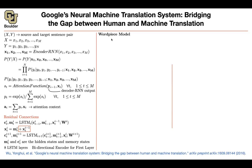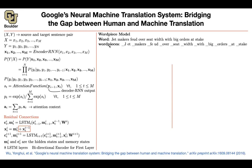We also use the word piece model — this is byte-pair encoding. If your sentence is, for example, 'jet makers feud over seat width with big orders at stake,' for word pieces you add a beginning-of-word character marker. You do this so you know when a word begins or ends, and you end up with a bunch of word pieces. This is exactly the byte-pair encoding algorithm.